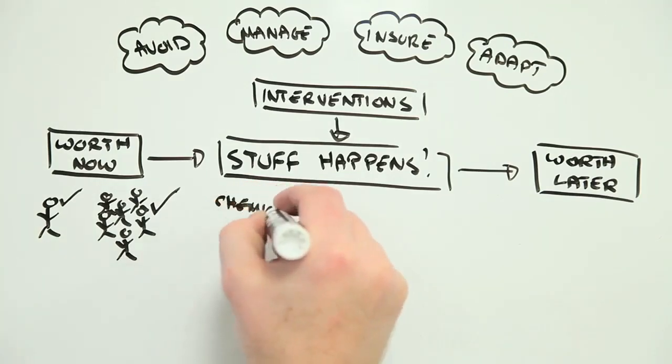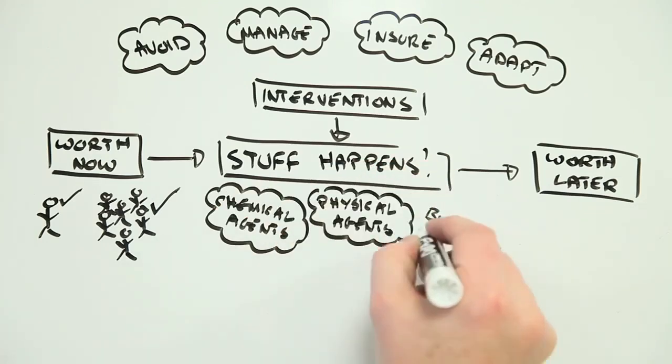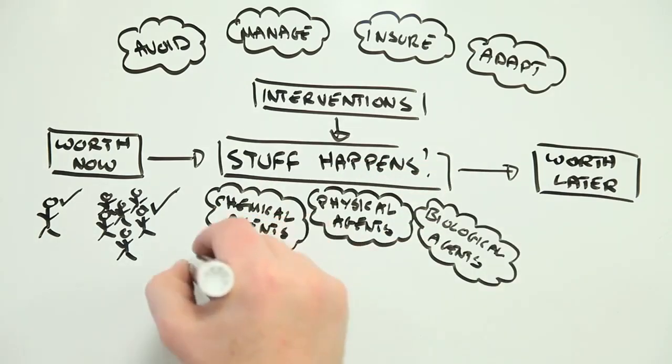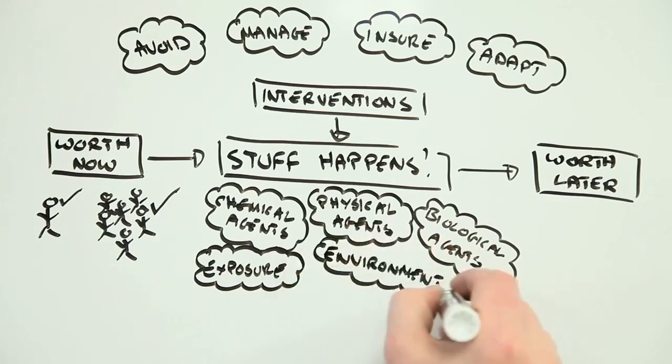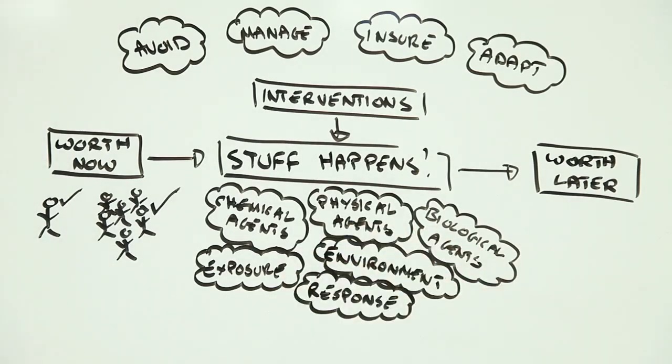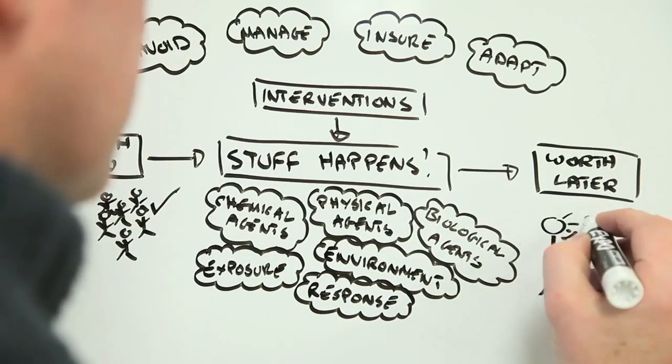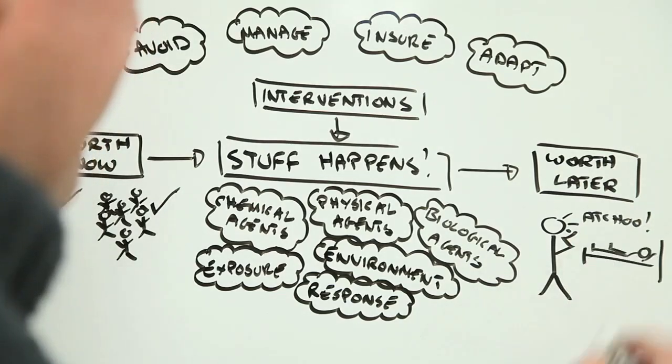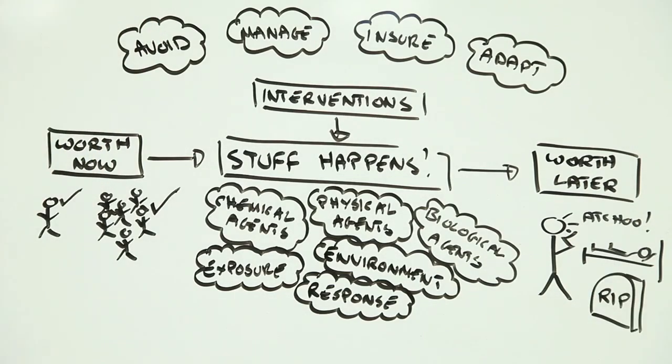The bad stuff is all the things that can adversely affect our health: the environment we live in, the stuff we're exposed to, the ability of our bodies to handle it. And the loss of worth is the impact on our health, whether it's as mild as a sore throat or as devastating as a terminal illness.